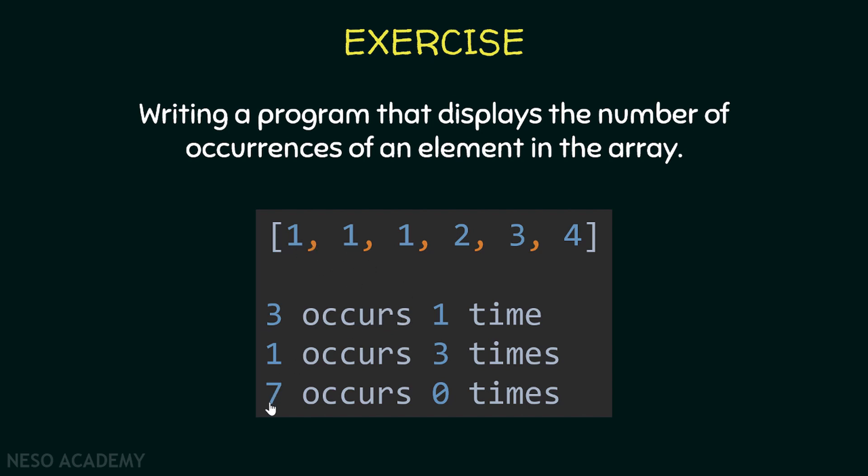Another example: if we have the element 7, then in this case it occurs 0 times. So our program should take a number and calculate the number of occurrences of this number in the array.